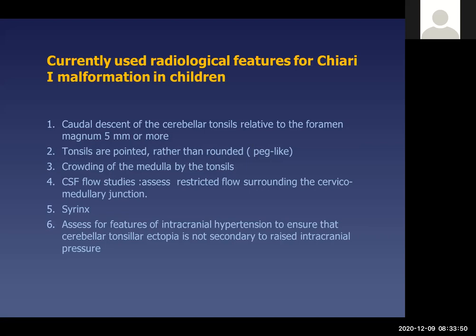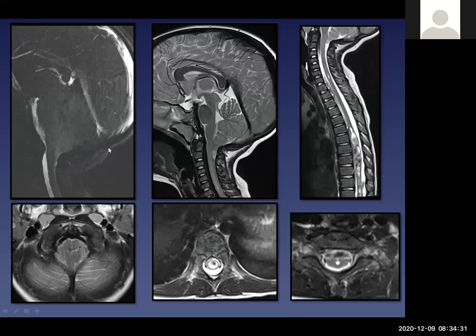The currently used radiological features for Chiari 1 malformation in children traditionally include caudal descent of the cerebellar tonsils relative to the foramen magnum of 5 mm or more, the tonsils being pointed rather than rounded, crowding of the medulla by the tonsils, restricted CSF flow surrounding the cervical medullary junction on flow study, presence of a syrinx on spine imaging, and features of intracranial hypertension to ensure tonsillar ectopia is not secondary to raised intracranial pressure.